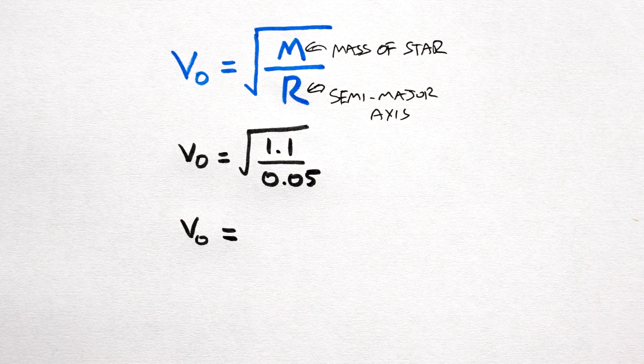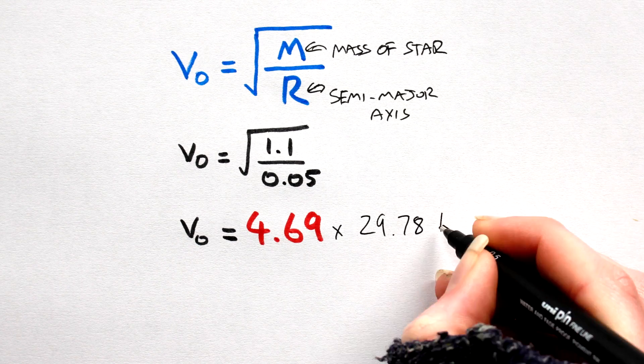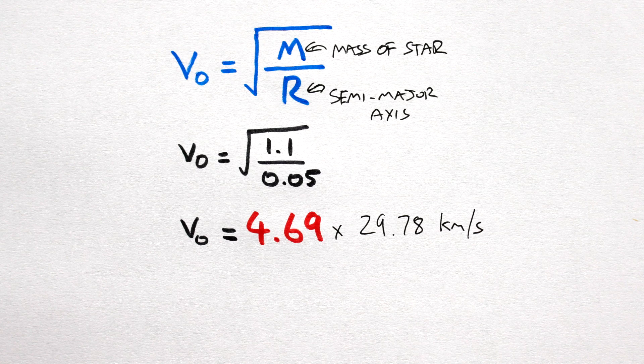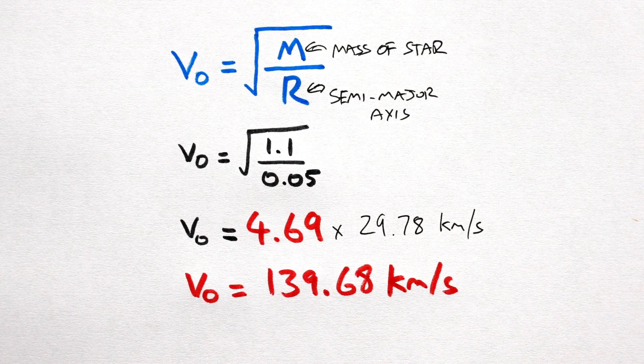Run the numbers and we get a value of 4.69 times the Earth's orbital velocity, which, when multiplied by the Earth's velocity, 29.78 kilometers per second, tells us that our hot Jupiter zips around its star at a staggering 139.68 kilometers per second.